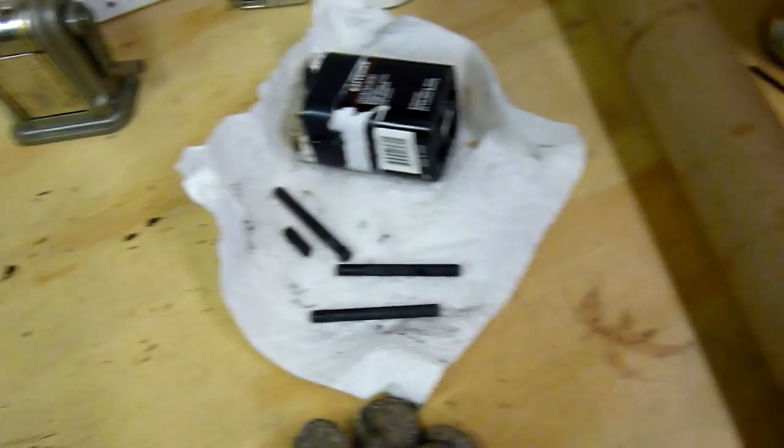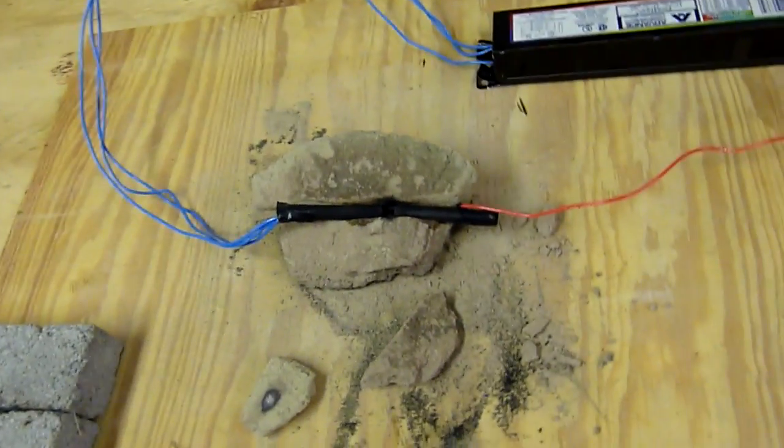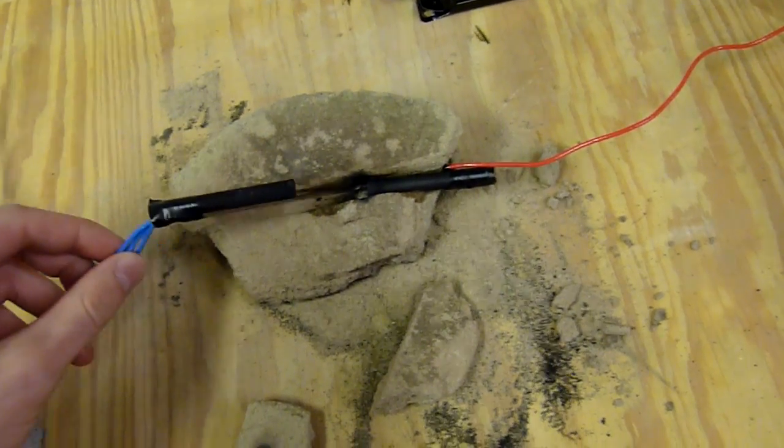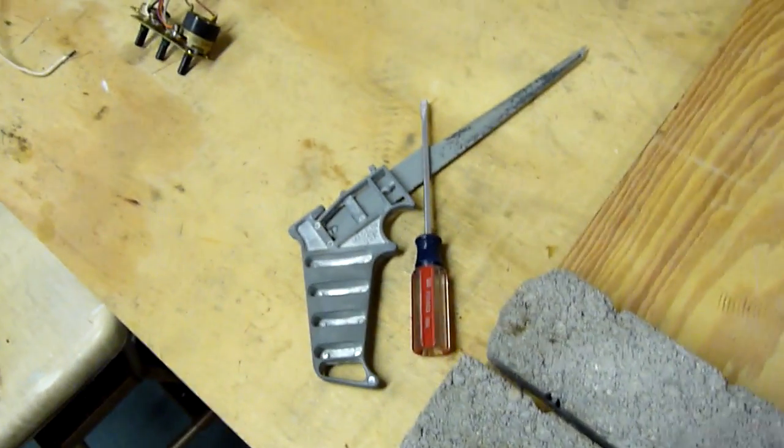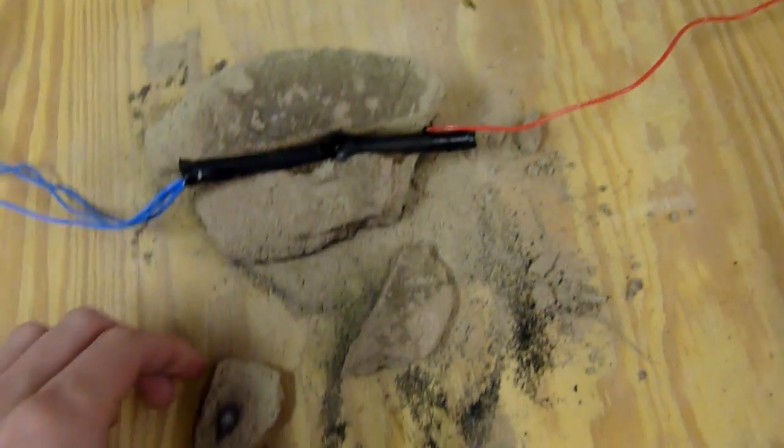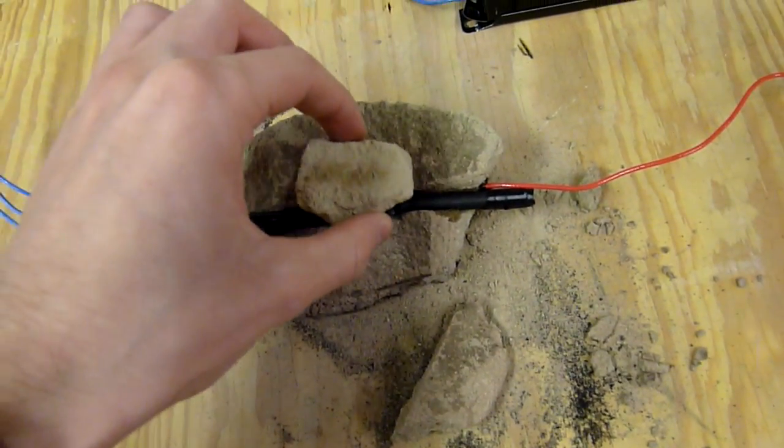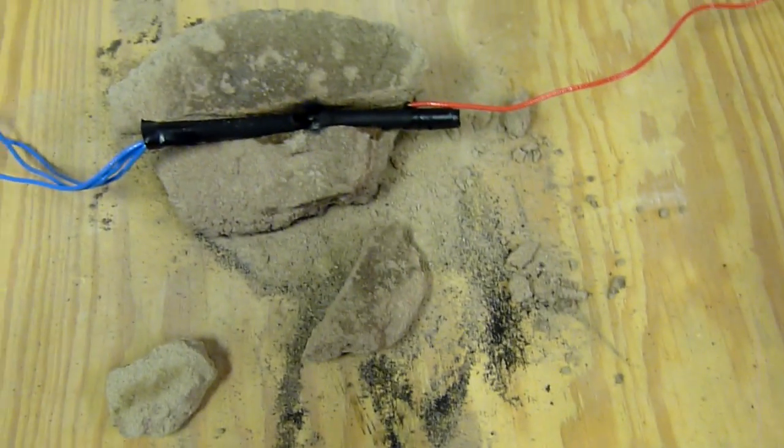Basically what it is is two carbon rods in a refractory block, which I've simply cut a slot in using some rudimentary tools. And I use this as a lid to put over there, but just for demonstration purposes I'll start the arc before I put the lid on.